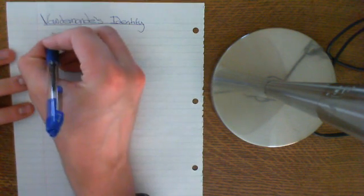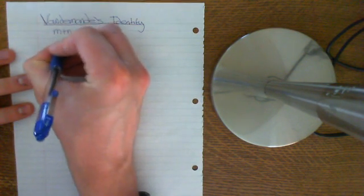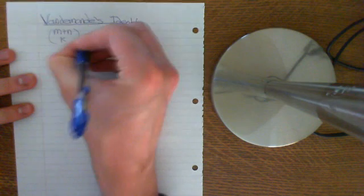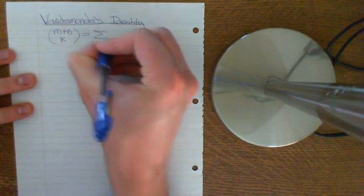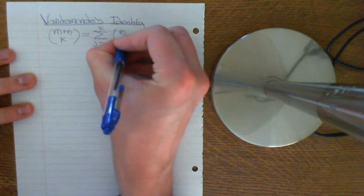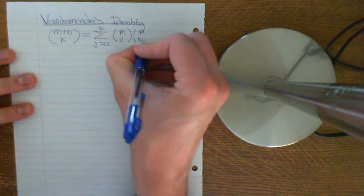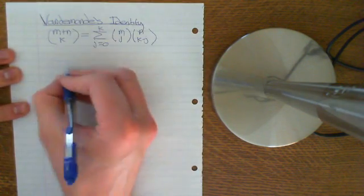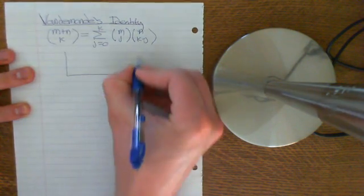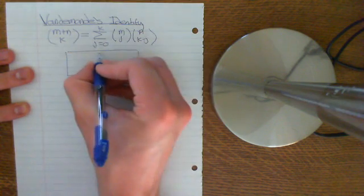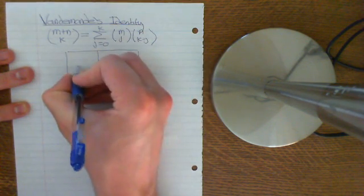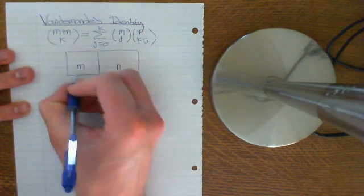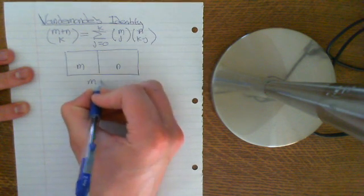So Vandermond's identity is that m plus n choose k is equal to the sum from j equals 0 to k of m choose j, n choose k minus j. Okay, so this is the setup, basically. We have a set, a set of things. We can split it up into m things and n things, and overall it makes m plus n.